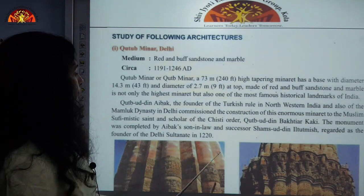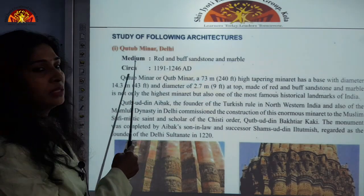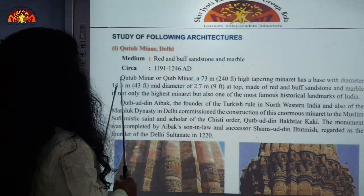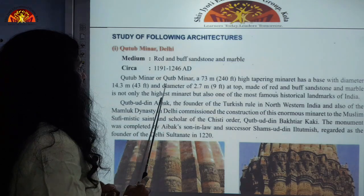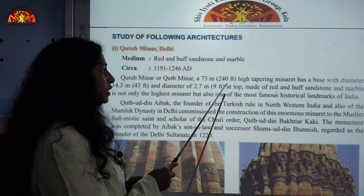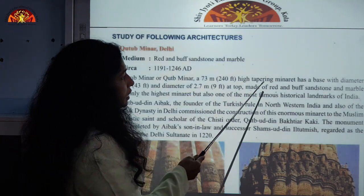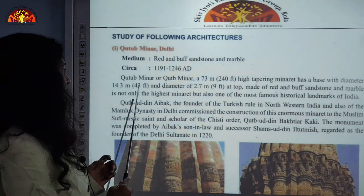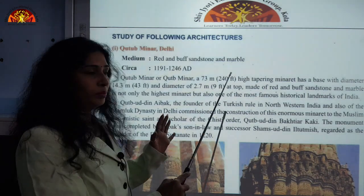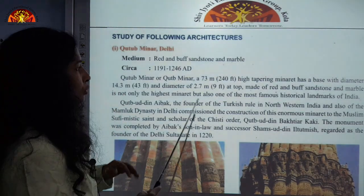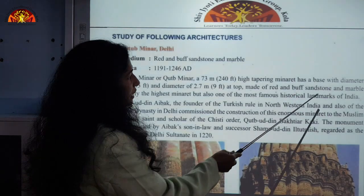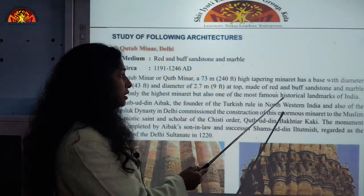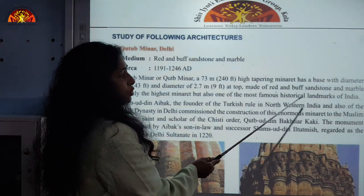This is the study of the architecture, and this is located in Mehrauli, Delhi. The Qutub Minar, constructed around 1100–1200 AD, is 73 meters — approximately 240 feet — high. It is a tapering minaret with a base diameter of 14.3 meters (43 feet) and a top diameter of 2.7 meters (9 feet). Built of red and buff sandstone and marble, it is not only the highest minaret but also one of the most famous historic landmarks of India.